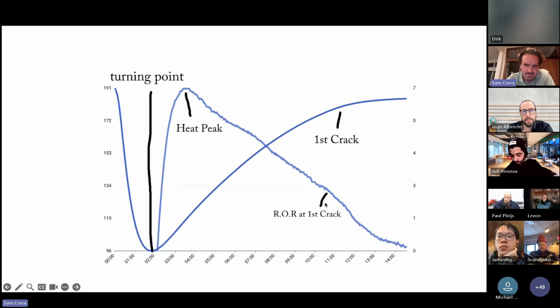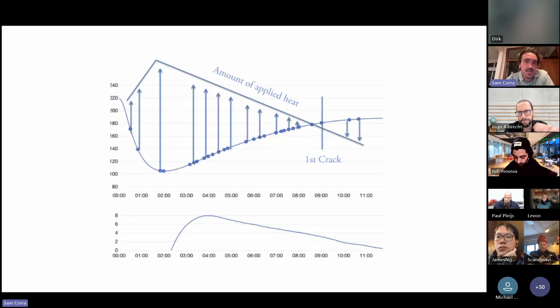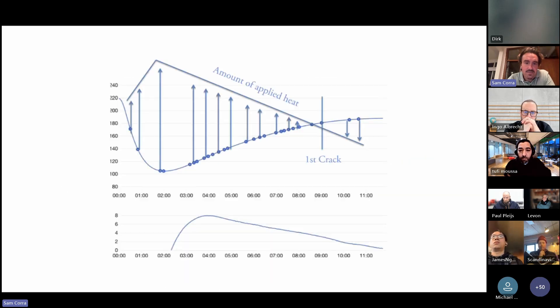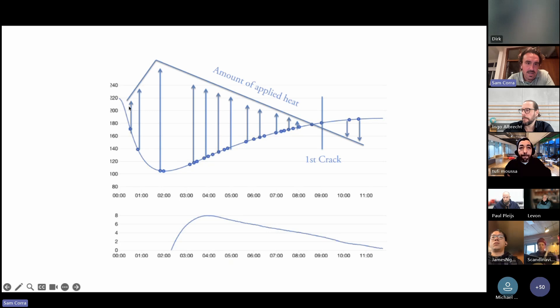The other thing to look at is rate of rise coming into first crack. This is very important when it comes to the applied heat and this directly relates to the number or the size of the power curve. The higher the power curves, generally what we'll be seeing in the roast is earlier applied heat, slightly higher drop temperatures, potentially higher turning points, higher rate of rise heat peaks at the start.